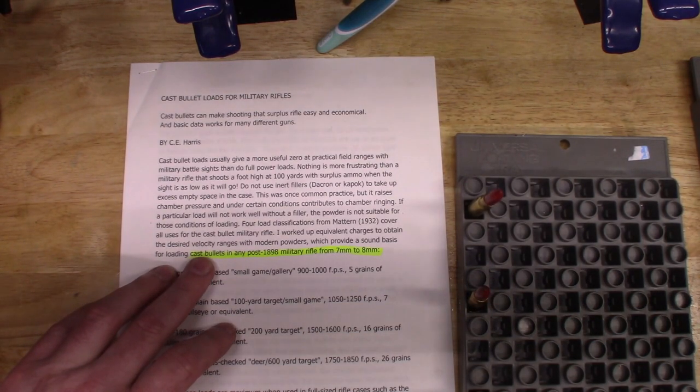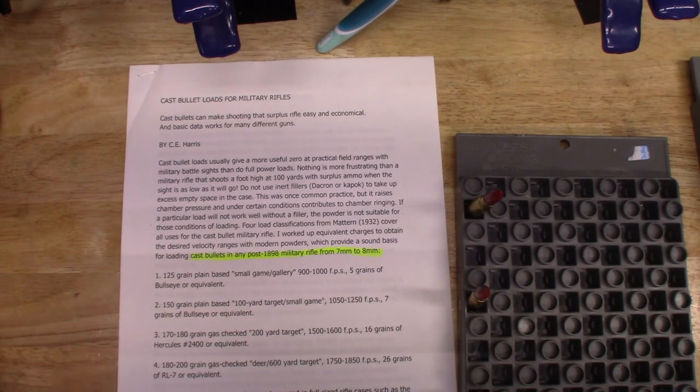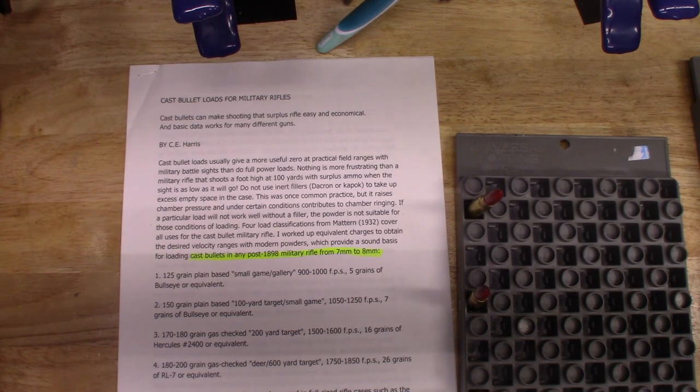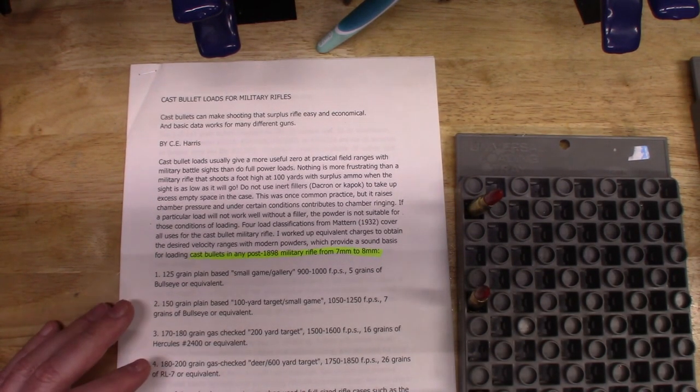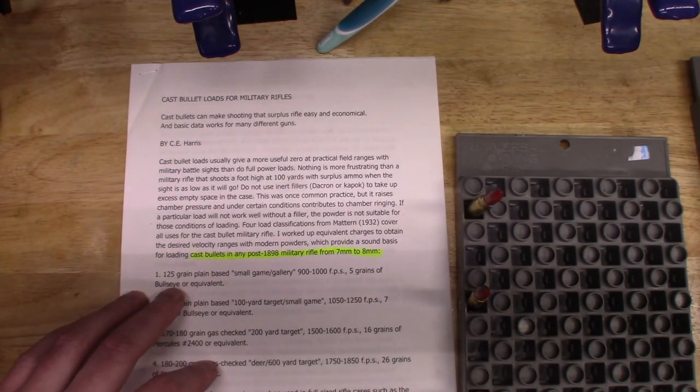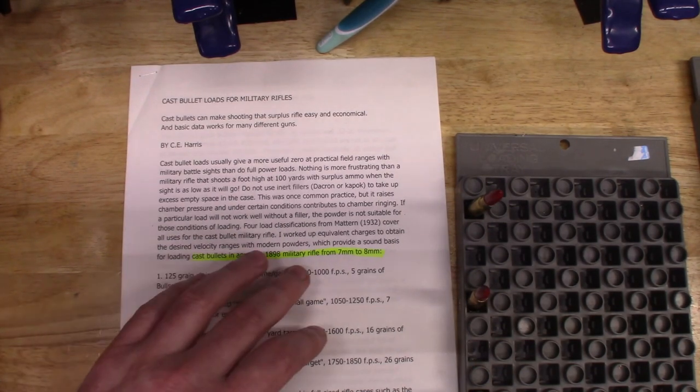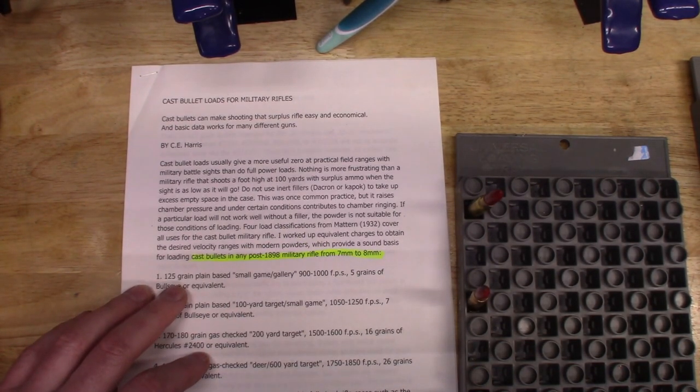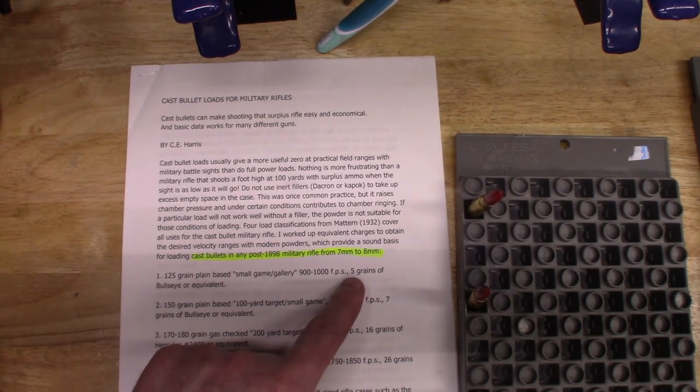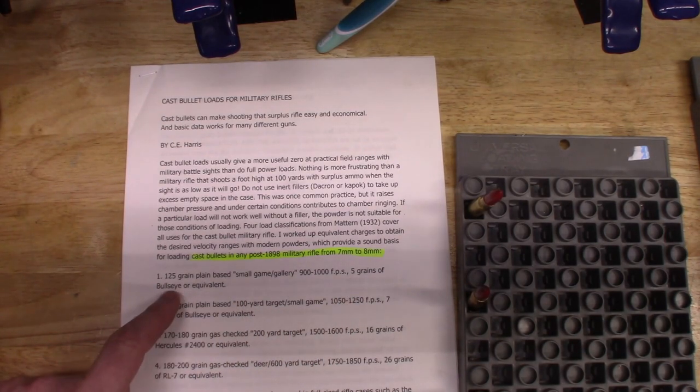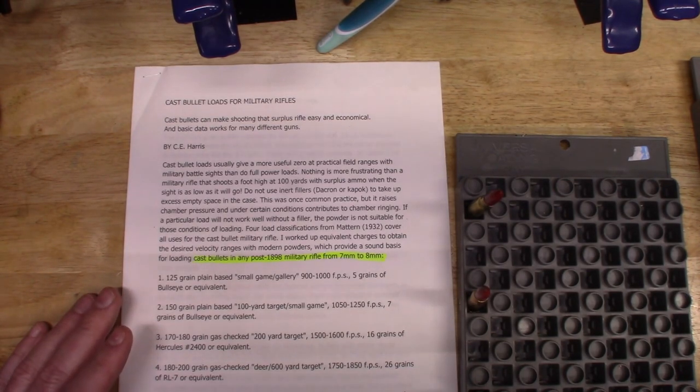The first part of this article tells you that these loads that he gives you can be used in any post-1898 military rifle from 7mm to 8mm. When you're using a really small 125 grain bullet in any of those calibers, you can use a really fast powder which will save you the most money, and you can use as little as five grains of Bullseye in a full-size military case with a cast bullet.